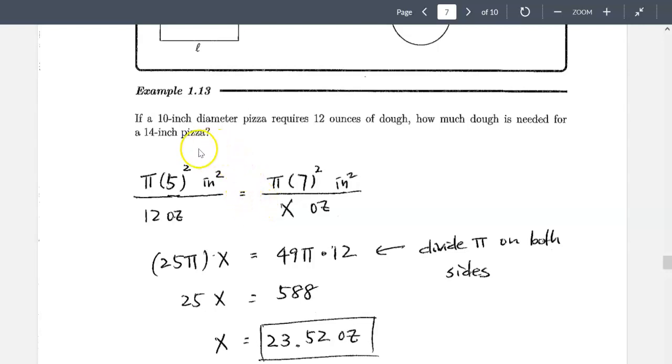So if you look at it, the way I'm going to set this up is I'm going to have area over how much dough you have for the pizza. So on the top, the numerator, I have π r² that's the formula for area of a circle, in this case area of a pizza. And on the other side same thing.